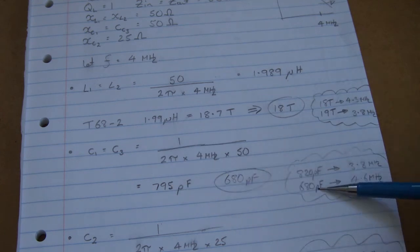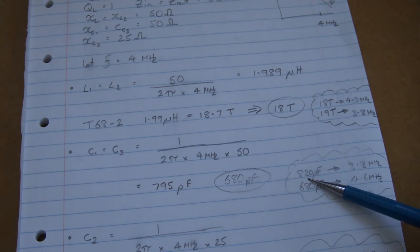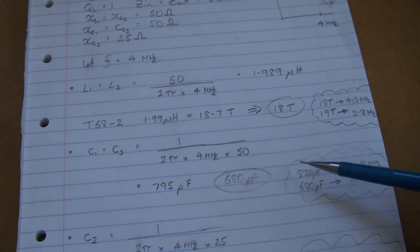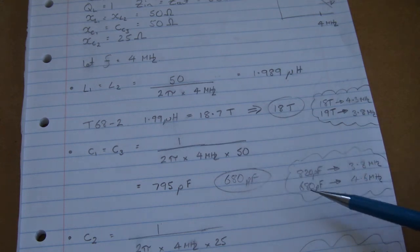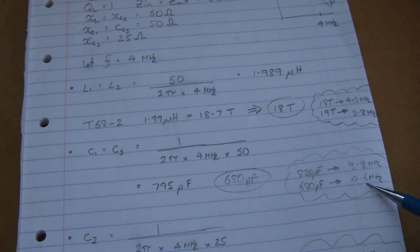So I'm going to evaluate the two standard values around that one, so 820 picofarads and 680 picofarads. If I look at 820 picofarads, the frequency at which that becomes 50 ohms turns out to be 3.8 megahertz, whereas if I go with 680 picofarads, it comes out to be 4.6 megs. So again, I'm going to select 680 picofarads, just to push that frequency out a bit.